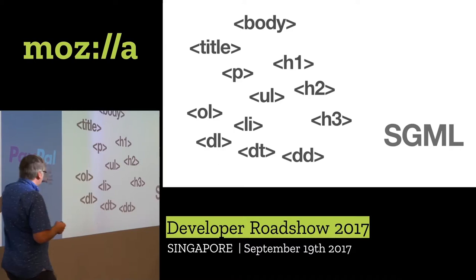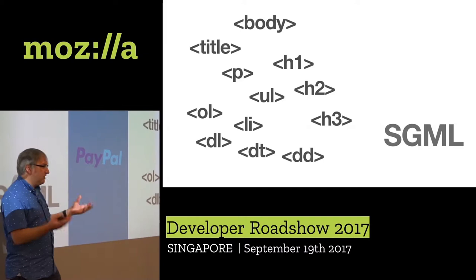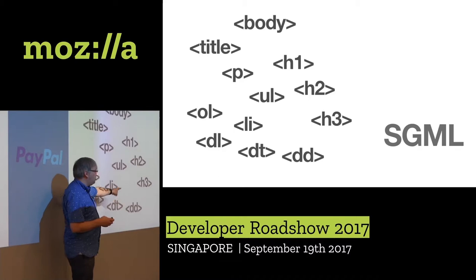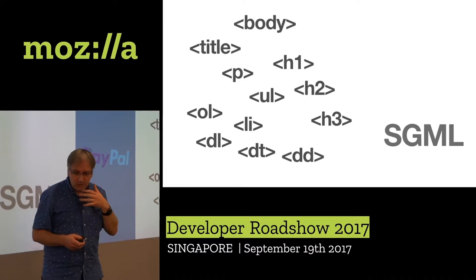If you look at the flavor of SGML being used at CERN back then, you would have seen elements like H1, H2, title — these are all from CERN SGML. Tim Berners-Lee literally took it wholesale; he just copied those elements and put them into HTML. That meant people would start using this technology straight away because it was familiar to them. In fact, you were able to take a CERN SGML document, just change the file extension to .html, and it would work in a web browser.